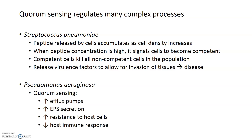P. aeruginosa is another bacterium that uses quorum sensing very effectively — to form biofilms, and also to contribute to antibiotic resistance by promoting transcription of efflux pumps, which pump drugs out of cells. It can also increase resistance to host cells and suppress the immune response. When P. aeruginosa meets its quorum threshold, it becomes really difficult to treat in patients because it can form biofilms and is highly resistant to host immune defenses.